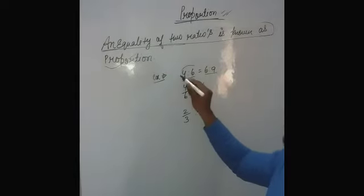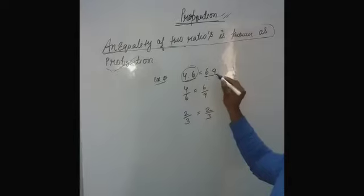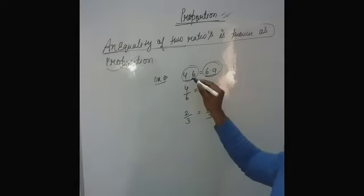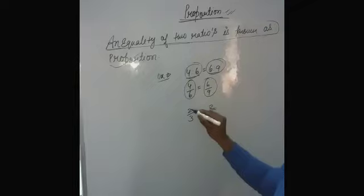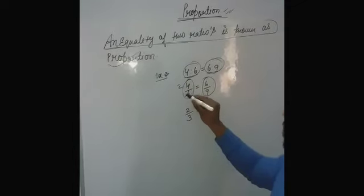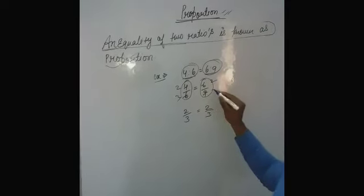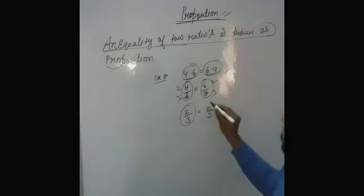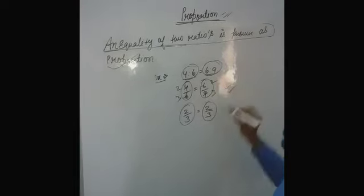4 is to 6 and 6 ratio 9. We write them in the form of 4 by 6 and 6 by 9. 2×2 is 4, 2×3 is 6, 3×3 is 9. So 2 by 3 is equal to 2 by 3. They are in proportion.